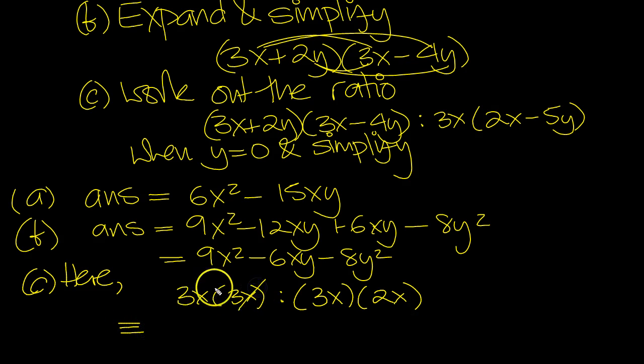Divide by x-squared both sides. And divide by 3 both sides. It just leaves 3 to 2. 3 to 2 is the same ratio.